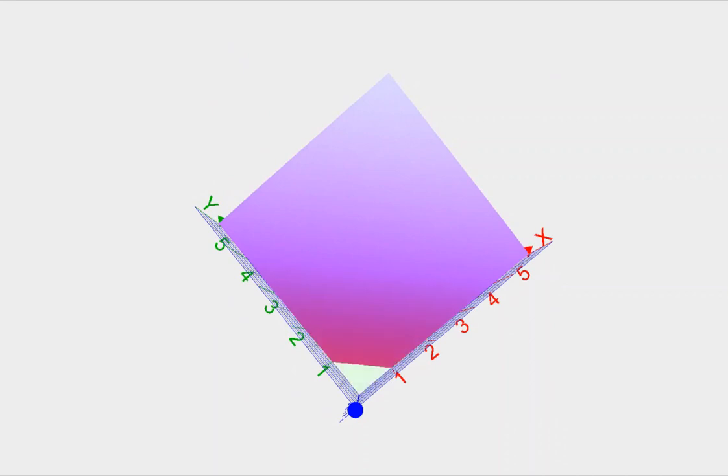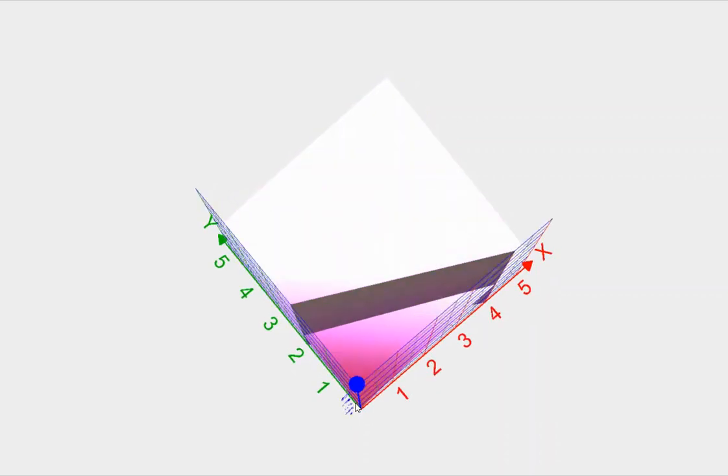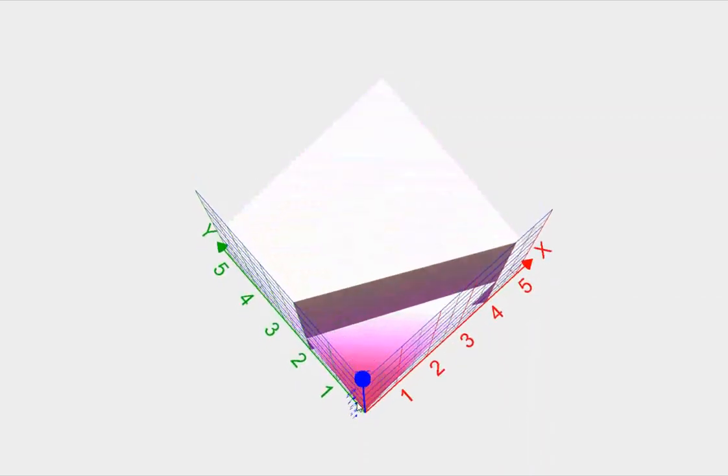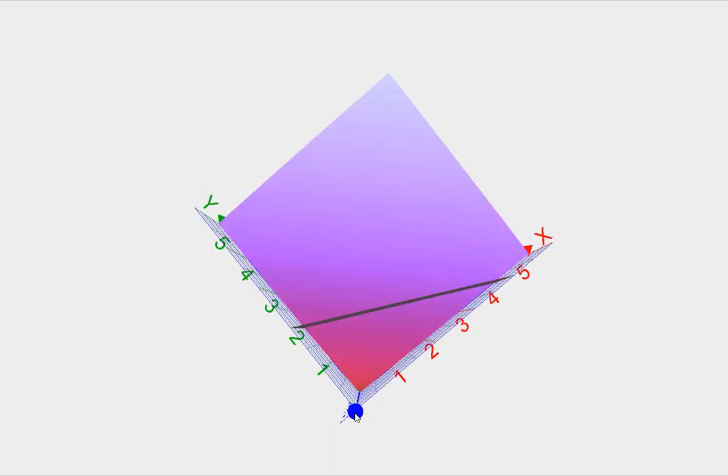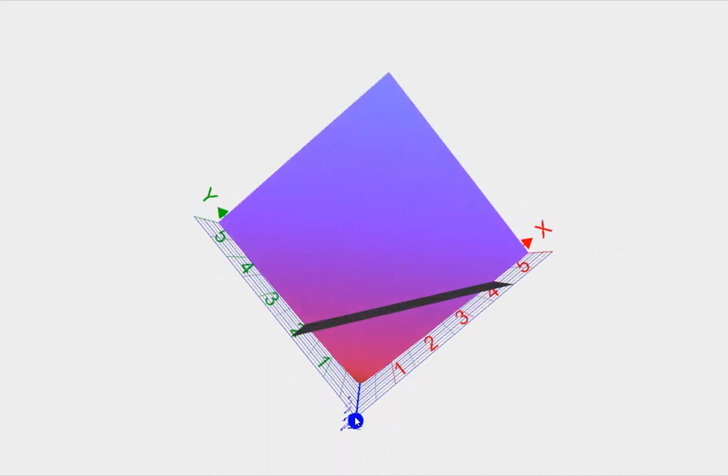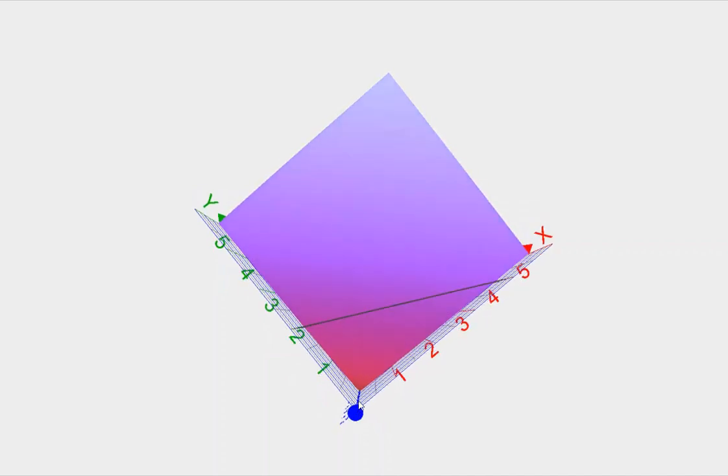All right, now let's introduce our budget constraint. Y equals 2 minus 0.5x. What's that look like? Well, we can either buy 2 units of good y or 4 units of good x. And how do we decide how much to buy?